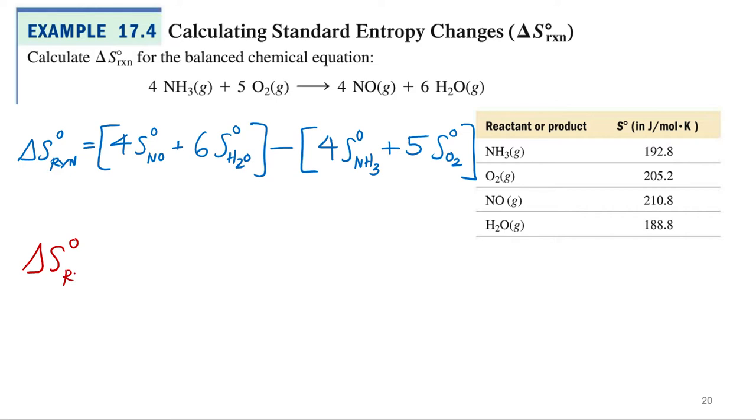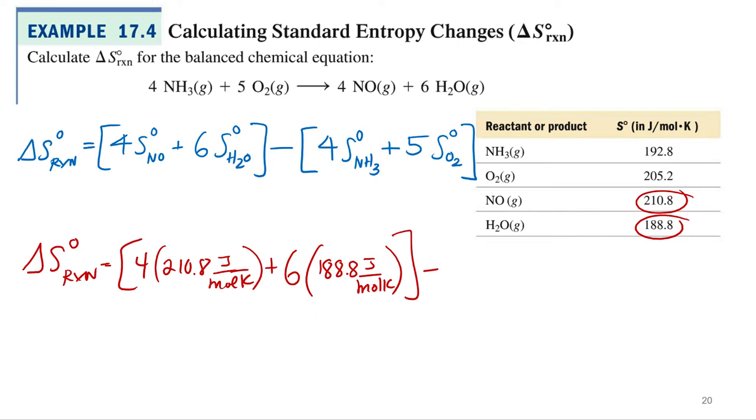Minus 4 times the entropy of ammonia plus 5 times the entropy of oxygen. So let's throw in these numbers. Delta S, the reaction, equals 4 times the entropy for nitrogen monoxide, 210.8 joules per mole kelvin, plus 6 times waters, 188.8 joules per mole kelvin. Minus the reactants, which starts off with 4 times ammonia, 192.8 joules per mole kelvin, plus 5 times oxygen, 205.2 joules per mole kelvin.